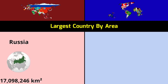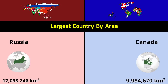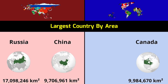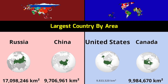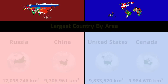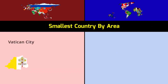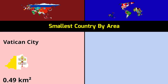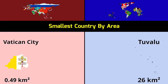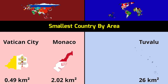Largest country by area — Asia: Russia 17 million square kilometers, China 9.7 million square kilometers; Rest of World: Canada 9.9 million square kilometers, United States 9.83 million square kilometers. Smallest country by area — Asia: Vatican City 0.49 square kilometers, Monaco 2.02 square kilometers; Rest of World: Tuvalu 26 square kilometers, Nauru 21 square kilometers.